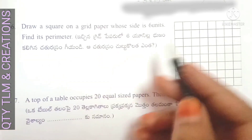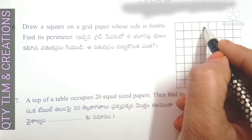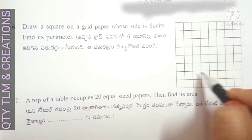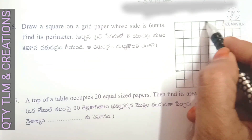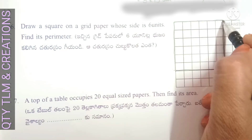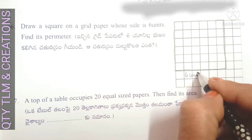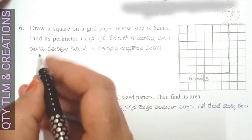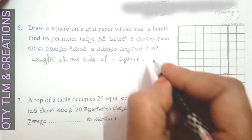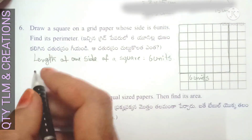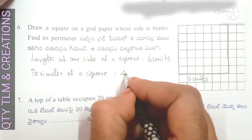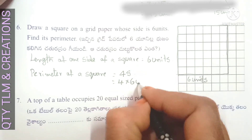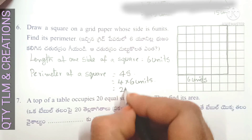Next question: draw a square on a grid paper whose side is six units and find its perimeter. Six units — one, two, three, four, five, six. Length is six units and breadth is also six units: one, two, three, four, five, six. A square has four equal sides; the length of one side is equal to six units. So perimeter of a square is equal to four into one side, that is four into six units, which equals 24 units.